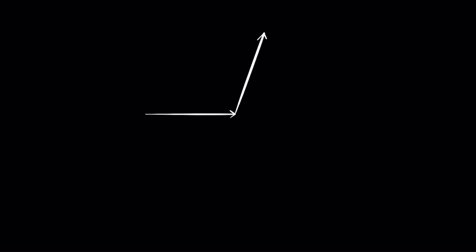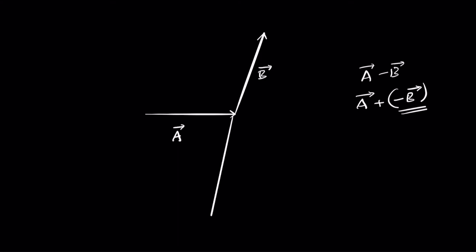Let's say we have vector A-bar and vector B-bar. How would you find the resultant A-bar minus B-bar? An intelligent way is to write A-bar plus negative B-bar. Negative B-bar is the negative of the B-bar vector. The negative here represents the direction, not the magnitude — the magnitude stays the same but the direction changes. So this vector represents minus B-bar.